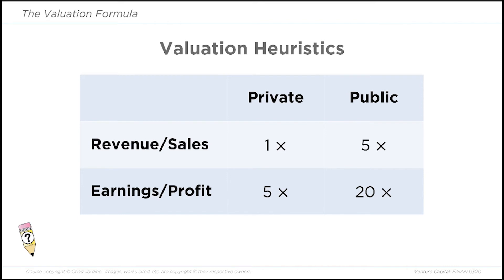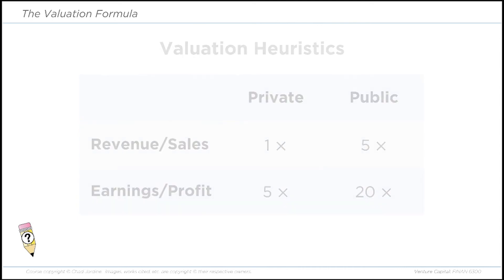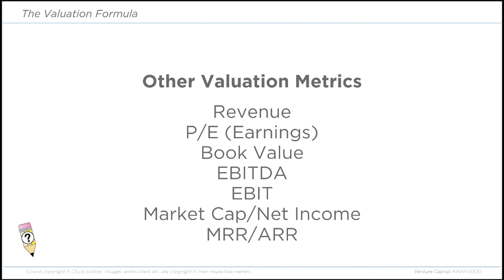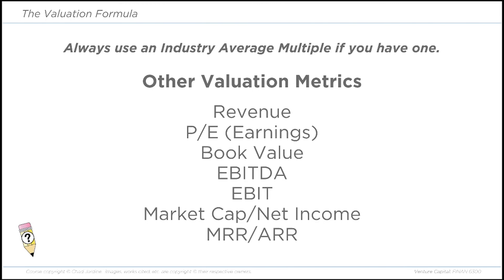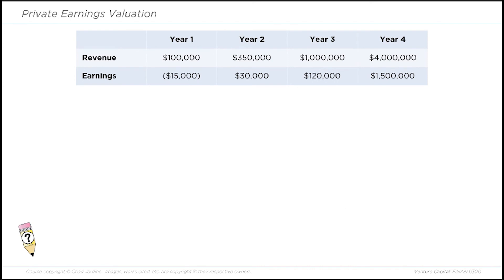Even though this is simple, it's super important, so make sure you get this. There will be story problems in the quiz that require you to be able to do this. For instance, if the company will have earnings of $1 million in three years and it's a private company, we might value the company at 5× earnings or $5 million. Or we could use revenue — if the company will generate $3 million in revenues in year three using a 1× multiple for private companies, that means the company is valued at $3 million in the third year. Other methods for valuing a company — revenue, earnings, book value, EBITDA, EBIT, market cap, net income, MRR, or ARR — can all be substituted in the denominator.